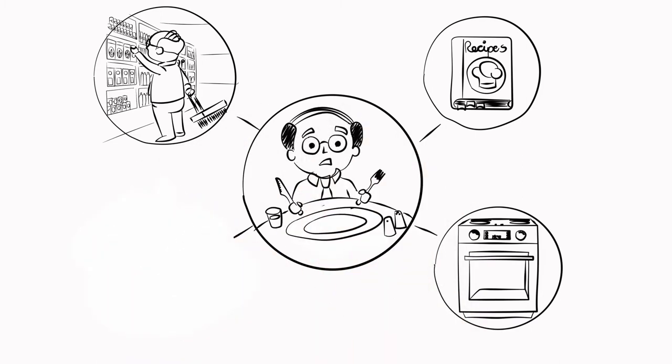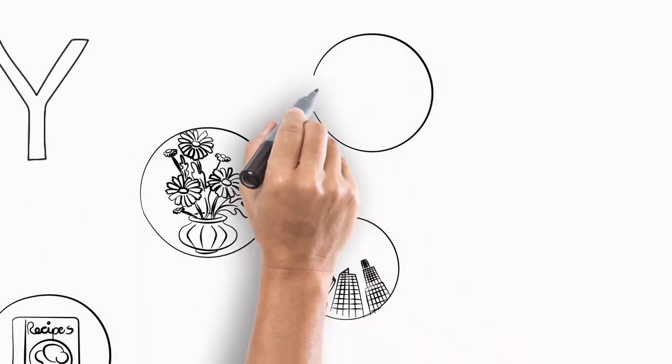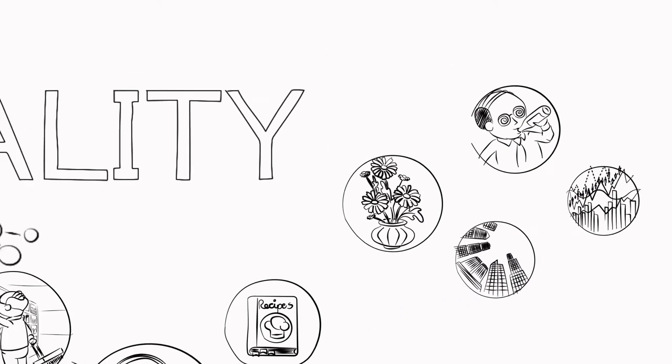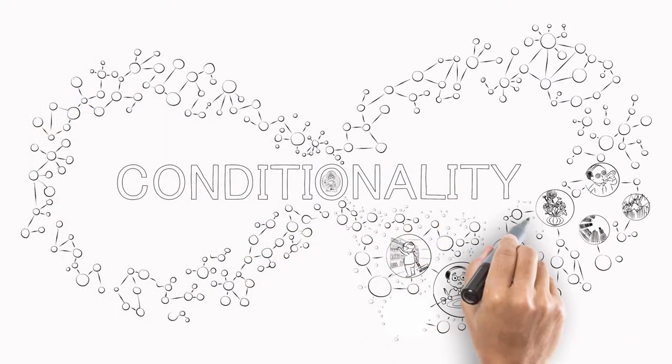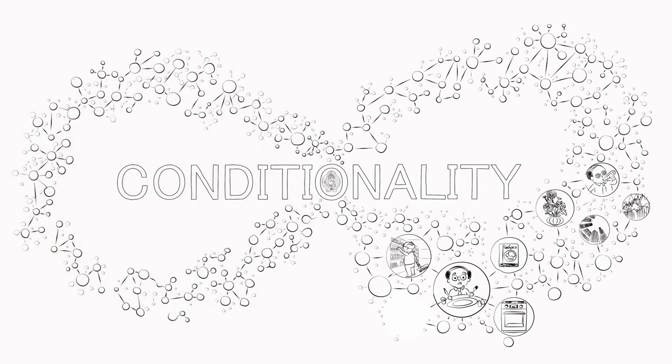This doesn't just apply to food but to all phenomena, from flowers to skyscrapers, from getting drunk to the stock market. All are dependent on conditions. In fact, every thing is joined up in an infinite web of conditions. No things exist independently. In fact, what we call things are really more like processes.